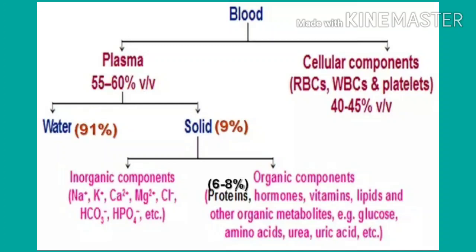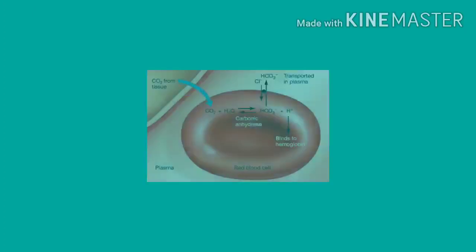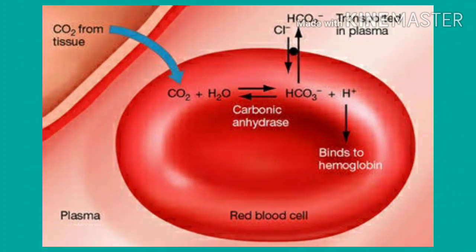The formed elements include erythrocytes, leukocytes and thrombocytes. Erythrocytes means red blood cells, leukocytes means white blood cells and thrombocytes means platelets. Let's start with the erythrocytes.